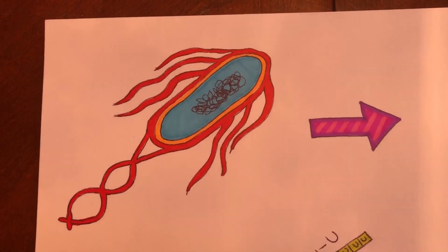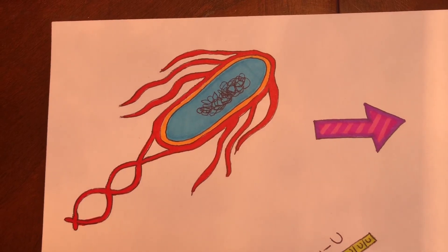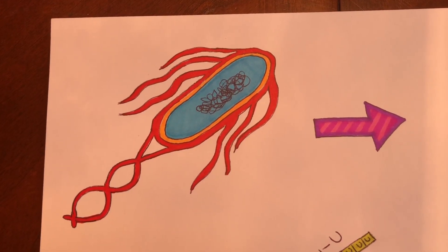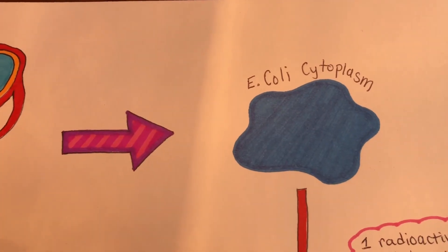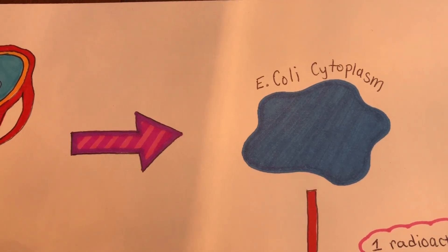Marshall Nirenberg and Johan Matai wanted to see how an E. coli cytoplasm would synthesize proteins when RNA was added. They used cytoplasm to create a cell-free environment, which would ensure no interference from biological processes associated with the cell's contents.